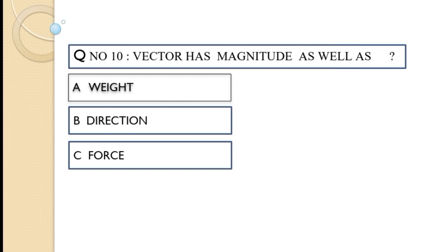Question number ten: Weight has magnitude as well as — option A weight, option B direction, option C force. The correct option of this question is option B, direction.